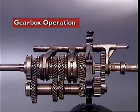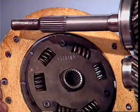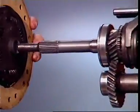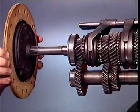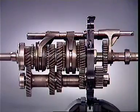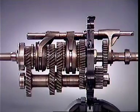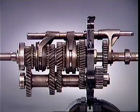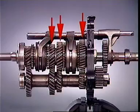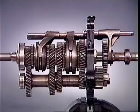This section examines gearbox operation in a rear wheel drive manual transmission. The splines on the input shaft engage with the splines of the clutch driven plate. With engine rotation and the clutch engaged, the input shaft transfers its motion through the counter shaft to rotate the gears on the main shaft.